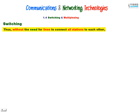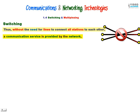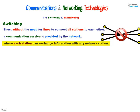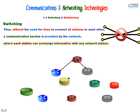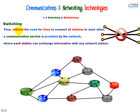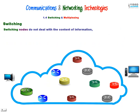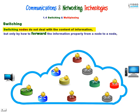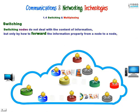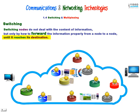Thus, without the need for lines to connect all stations to each other, a communication service is provided by the network where each station can exchange information or data with any network station. So we have these routers — these are symbols of routers. There's no need for lines to connect all stations, only to find a route, point to point from one router to another. Switching nodes do not deal with the content of information. They don't care what they transfer, but only how to forward the data properly from node to node, until it reaches its destination.